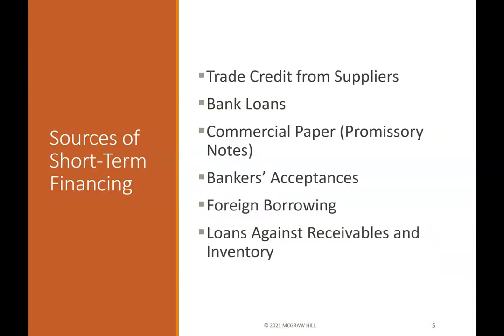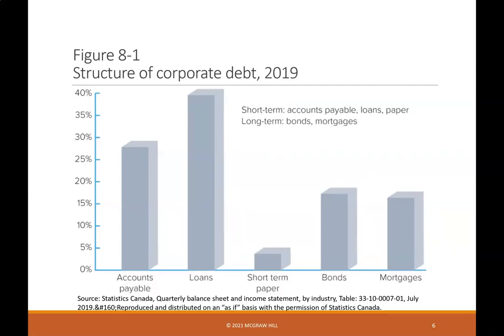Sources of Short-Term Financing include: trade credit from suppliers, bank loans, commercial paper promissory notes, bankers acceptances, foreign borrowings, and loans against receivables and inventory. Figure 8-1 shows the Structure of Corporate Debt in 2019, covering short-term items such as accounts payable, loans, and paper, and long-term items such as bonds and mortgages.